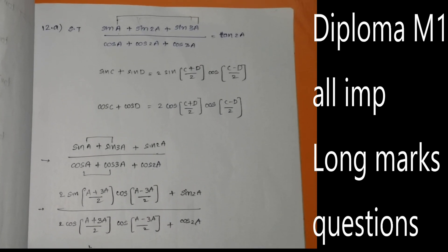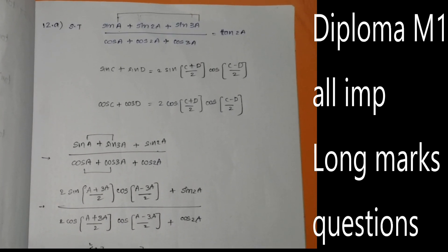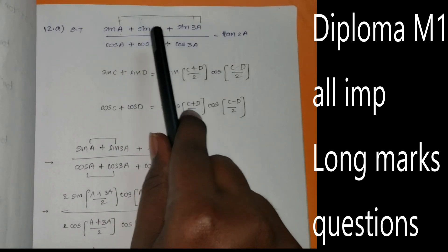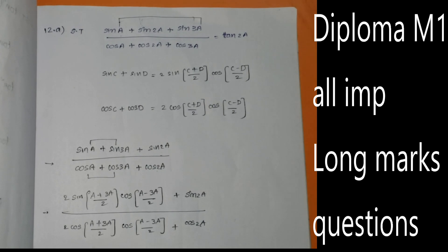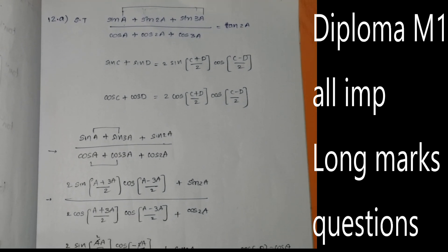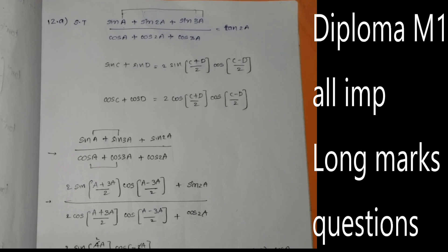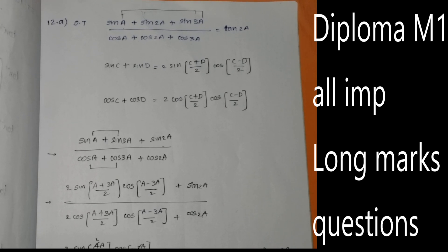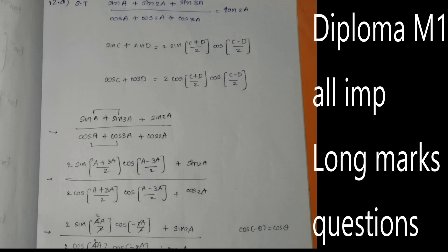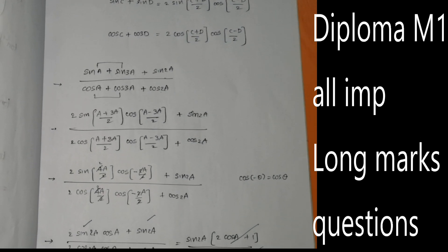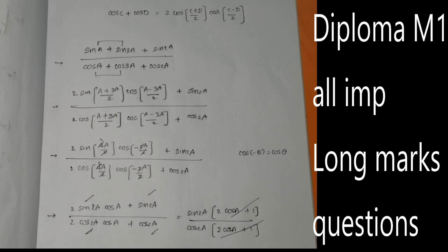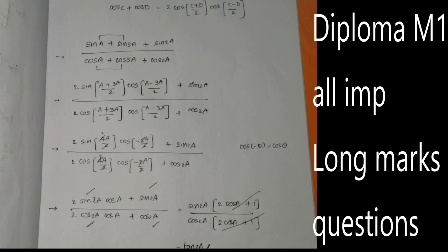We are left with sin(2A) divided by cos(2A), which equals tan 2A. That is what we had to prove. The key trick here is to apply the sum-to-product formula by grouping the first and last terms. If you apply the formula correctly, you will get the answer. Thank you, friends.